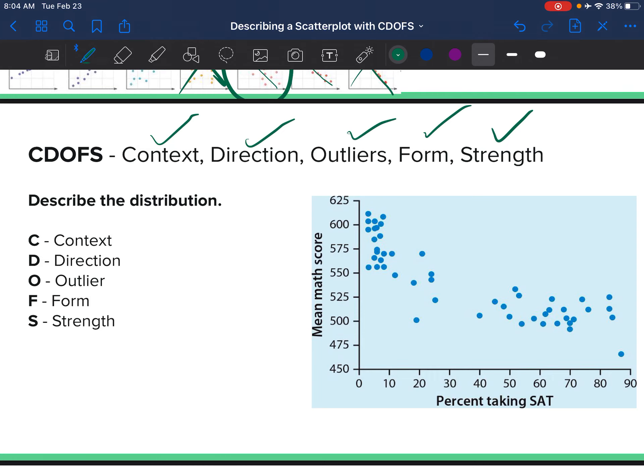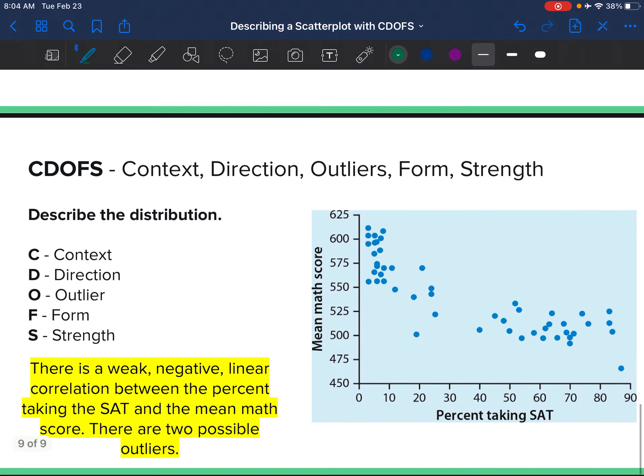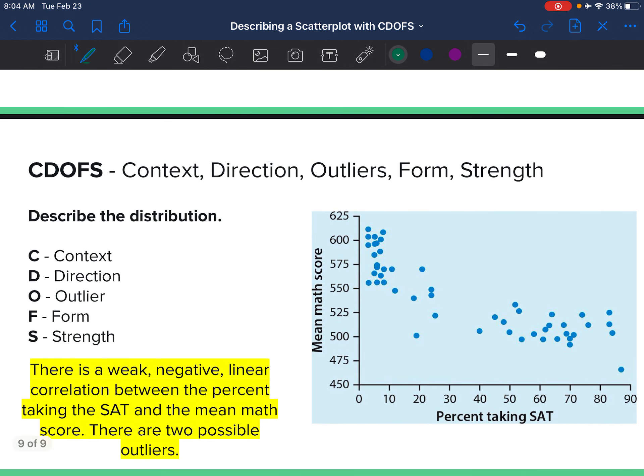We have our context, direction, outlier, form, and strength. Let's put it all together. This is my answer: There is a weak negative linear correlation between the percent taking the SAT and the mean math score. There are two possible outliers.